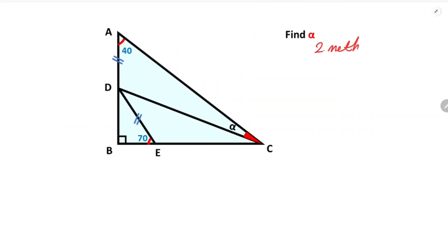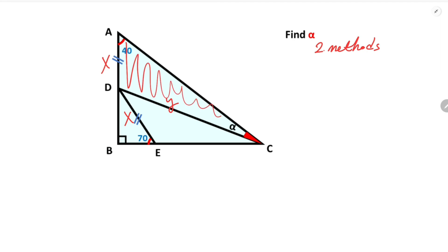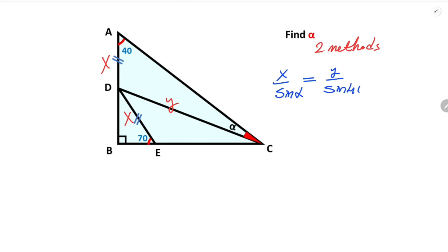This was the first method. Now we will calculate the value of alpha using a second method. Let's call these equal sides x units, and this other side I'm going to represent with y. For this triangle, if we apply the sine rule: x over sine alpha equals y over sine 40. Therefore x over y equals sine alpha over sine 40.